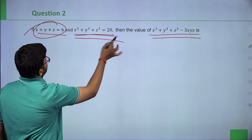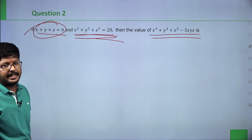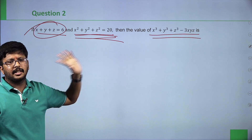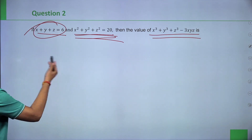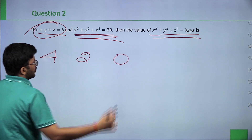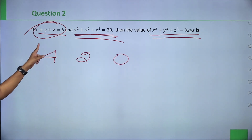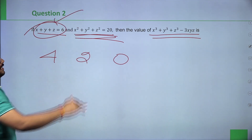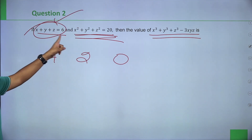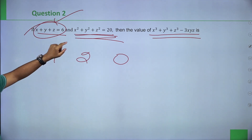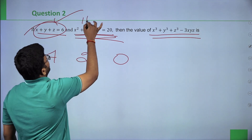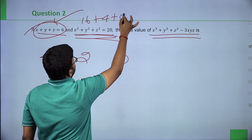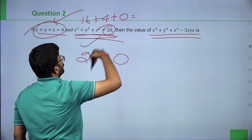We need numbers that add to 6 and whose squares add to 20. The numbers 4, 2, 0 work: 4 plus 2 plus 0 is 6 — first condition satisfied. x square plus y square plus z square: 4 square is 16, plus 2 square is 4, plus 0 square is 0, giving 16 plus 4 plus 0 equals 20 — second condition satisfied.